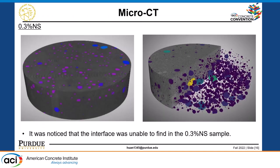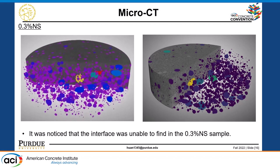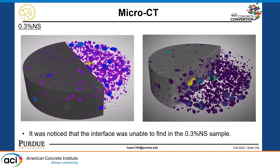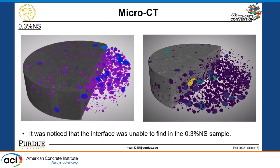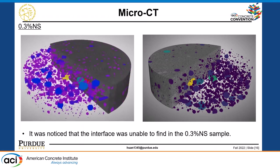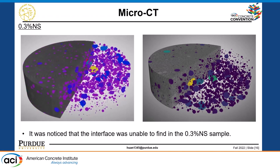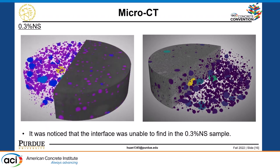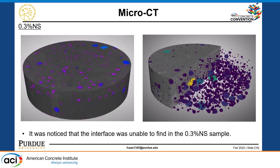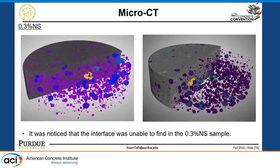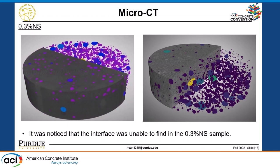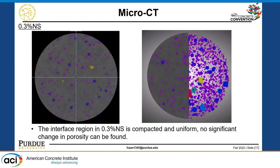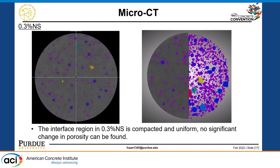Moving to the 0.3% nanosilica sample, this one was much better. Even though you can observe a difference in porosity between the top and bottom layers — which was intentionally designed so we can know where the interface is — for the 0.3% nanosilica, you can barely observe the interface. We only observe a couple of large voids at the interface, and I was not able to extract the interface out of the voids unlike the reference. So I would say the interface was greatly improved. In another direction, no significant change in porosity is observed when we reach the interface region, so the quality was significantly improved.